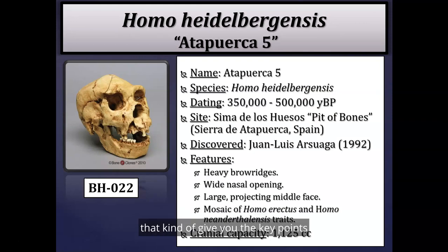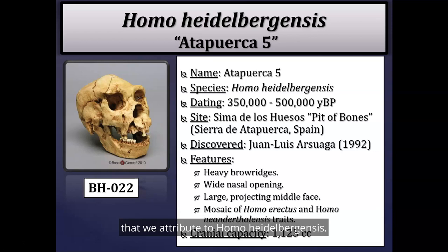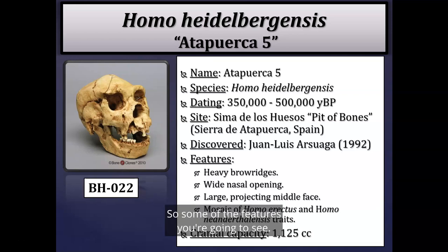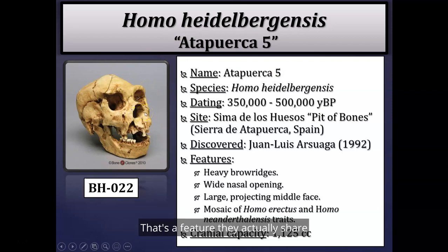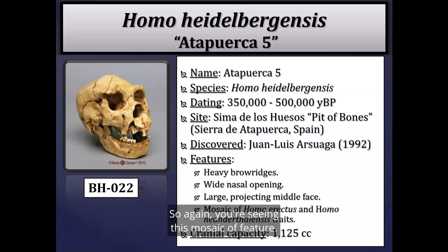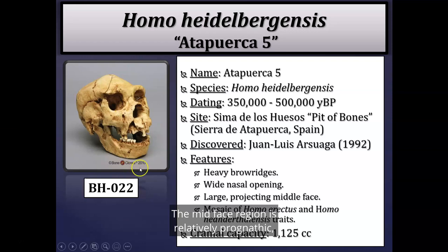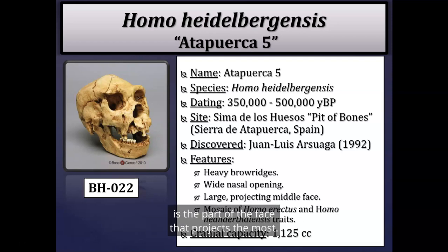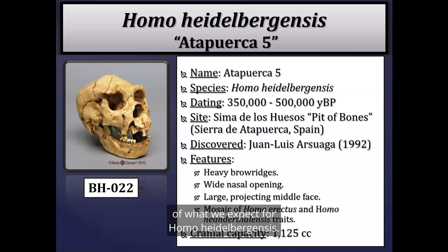Here's the summary slide for Atapuerca 5, attributed to Homo heidelbergensis, uncovered at the site Sima de los Huesos (Pit of Bones) in Atapuerca, Spain. Features include relatively heavy and pronounced brow ridges — shared with Homo erectus — and a relatively wide nasal opening or nasal aperture shared with Homo neanderthalensis as a cold adaptation. The mid-face region is relatively prognathic, projecting outward when viewed from the side. Cranial capacity is about 1,125 cc, within the expected range for Homo heidelbergensis.